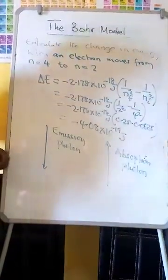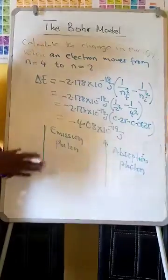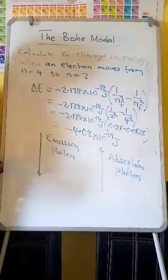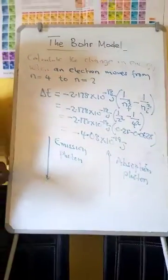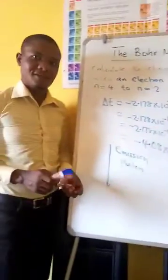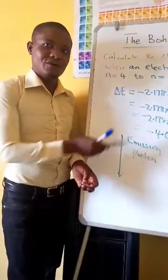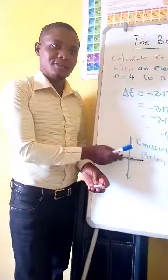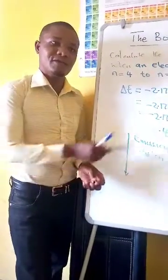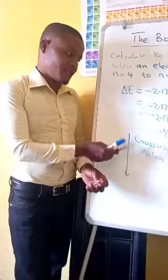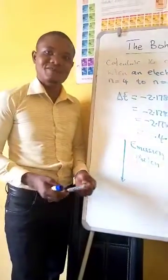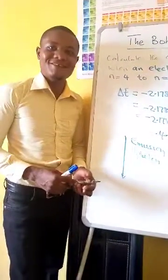So this is how we can calculate the energy between two energy levels. In the next tutorial, we'll look at how we can calculate the wavelength of the emitted or absorbed photon. Thank you.